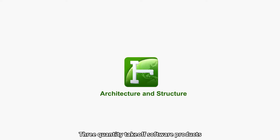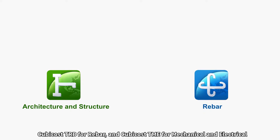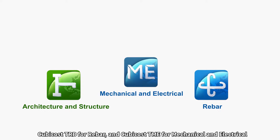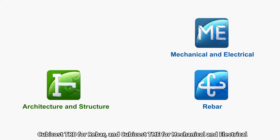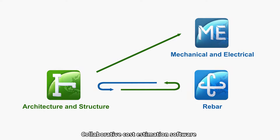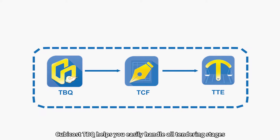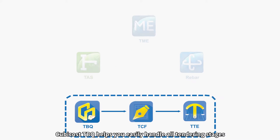Three quantity takeoff software products, including Qubicost TAS for architecture and structure, Qubicost TRB for rebar, and Qubicost TME for mechanical and electrical, help you deal with all kinds of calculations with BIM technology. Collaborative cost estimation software Qubicost TBQ helps you easily handle all tendering stages.